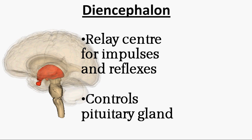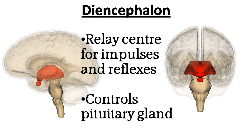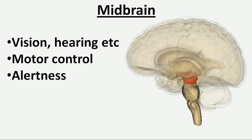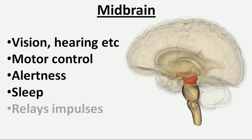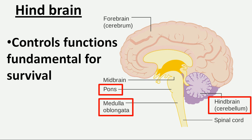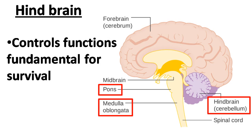The diencephalon relays information and controls the pituitary gland, which is a very important hormone gland. The midbrain is associated with vision, hearing, motor control, sleep-wake arousal, and temperature regulation. It is a small, thick stalk-like portion that connects the forebrain with the cerebellum of the hindbrain.